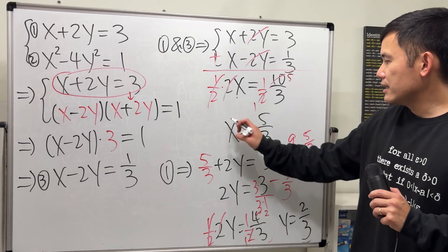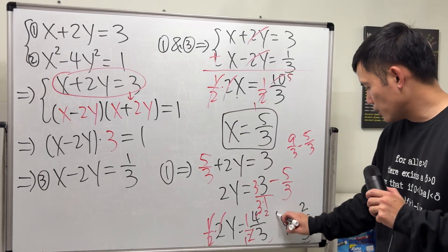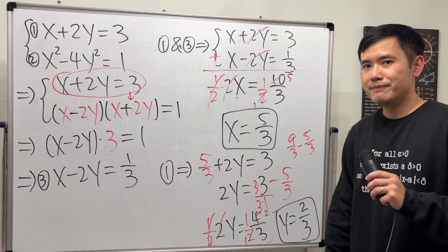So here we have it. x equals 5 over 3, y equals 2 over 3. And that will do it.